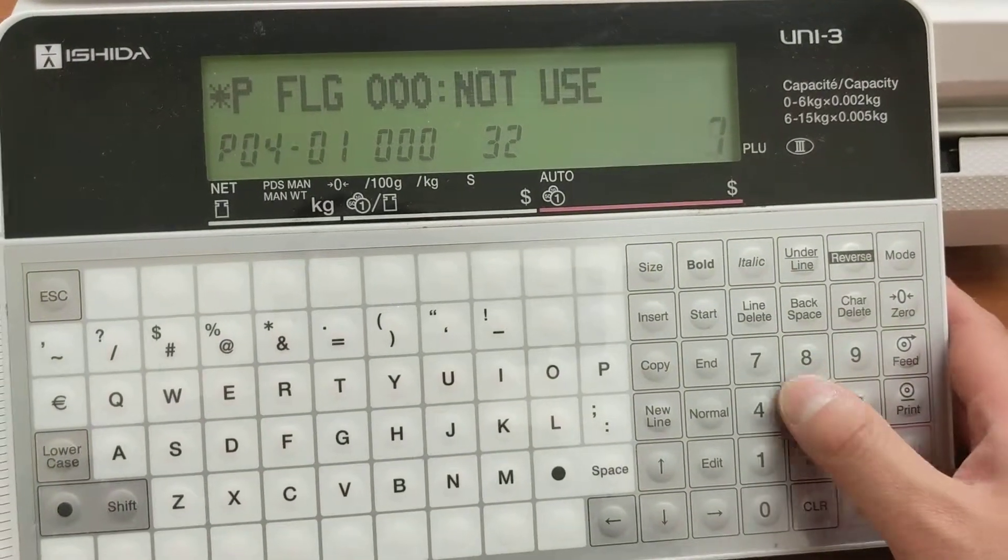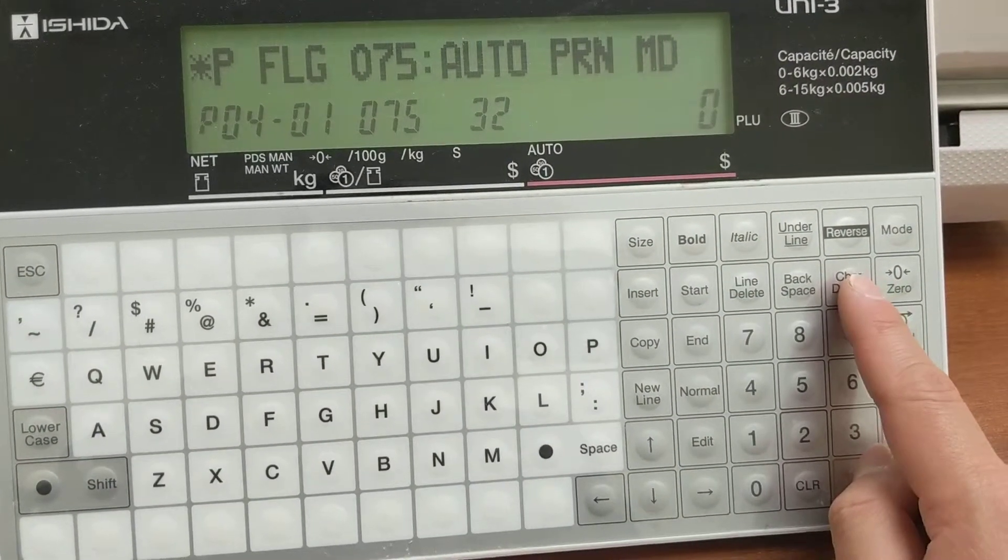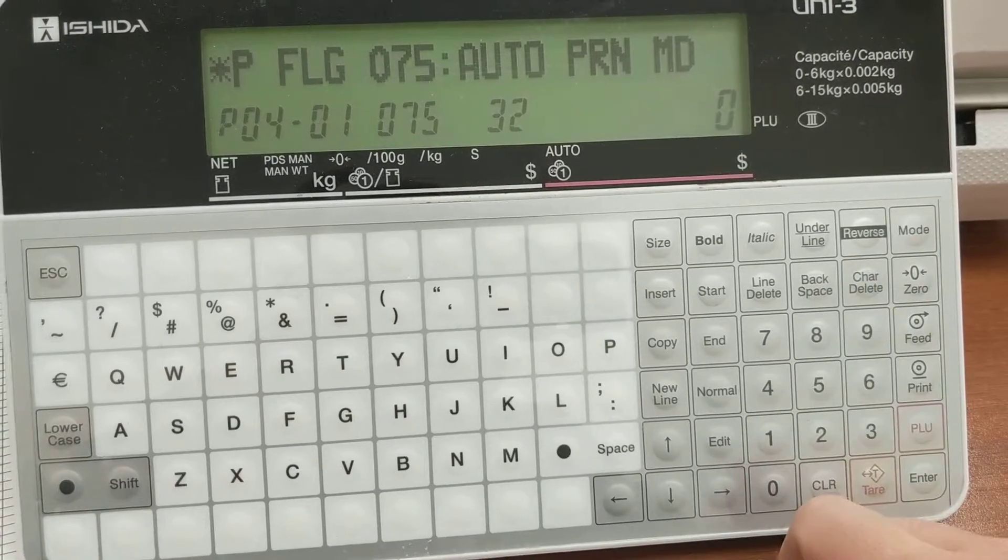So we're going to hit 75, PLU, auto print mode. And then to map it to this key, I'm going to hit 0 and then touch the key.